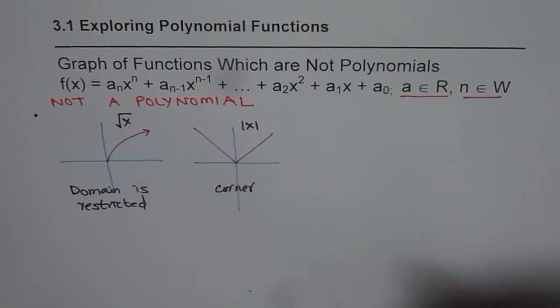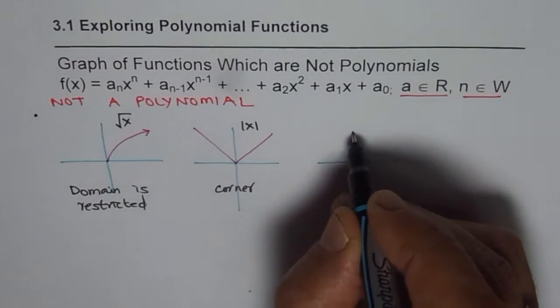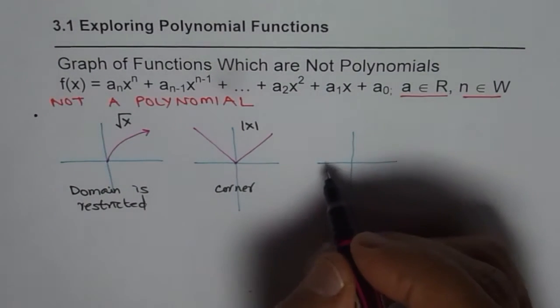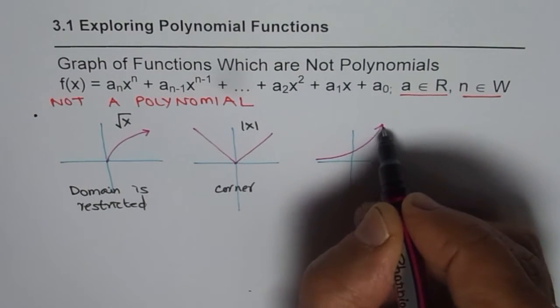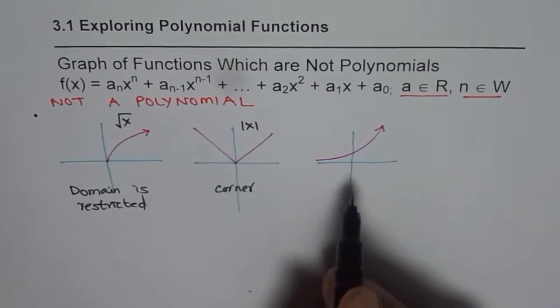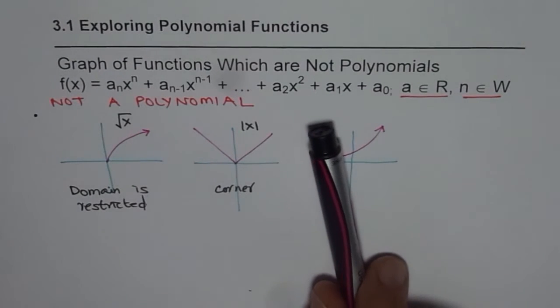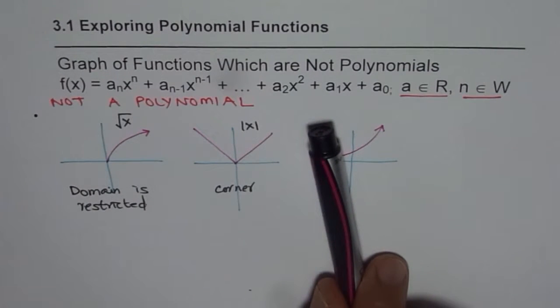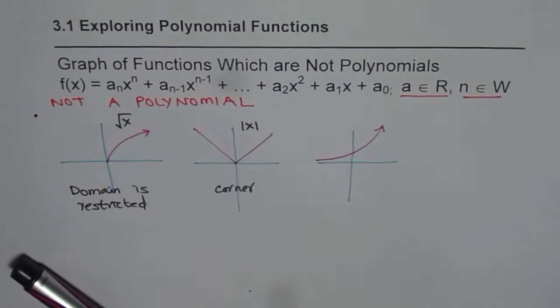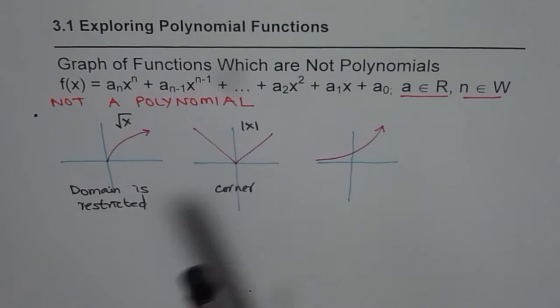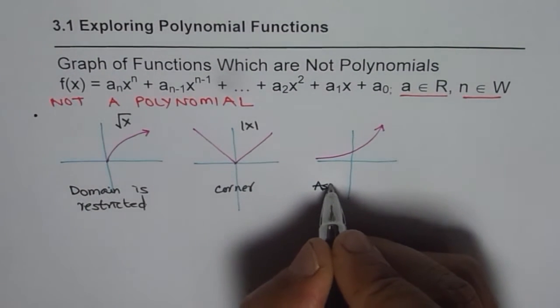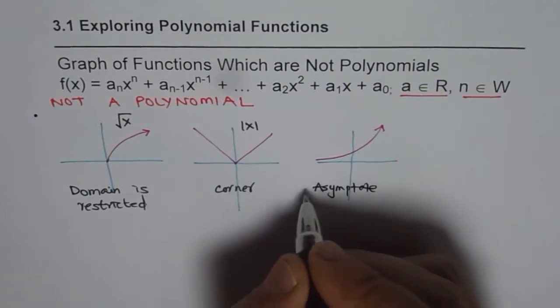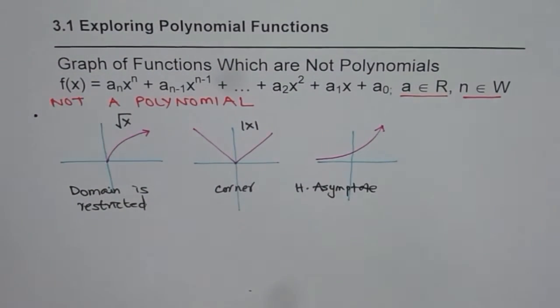Or you could have a function which has asymptotes. A polynomial will never have any asymptote. Let me draw exponential function for this. This is a continuous function. If you see only a part of this function, it may look like a polynomial to you. But you have to see the function as a whole. Now since it has an asymptote, it is not a polynomial. In this case, it is a horizontal asymptote.